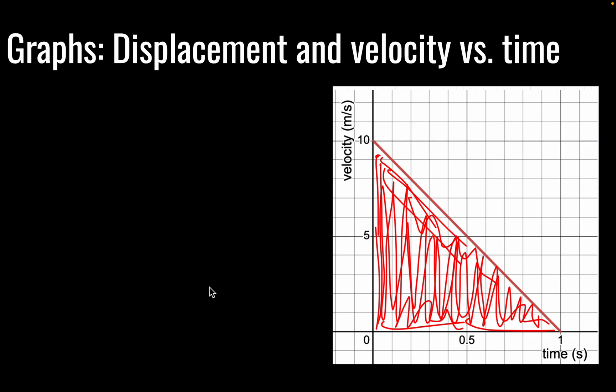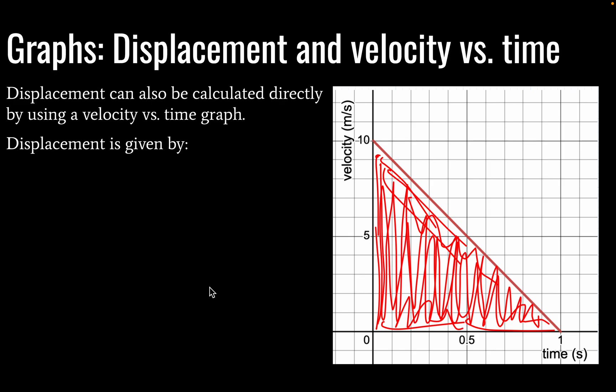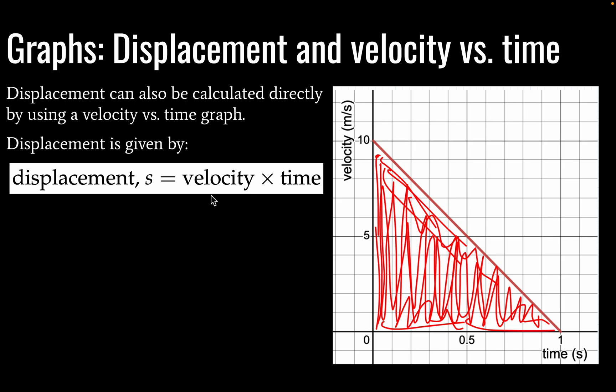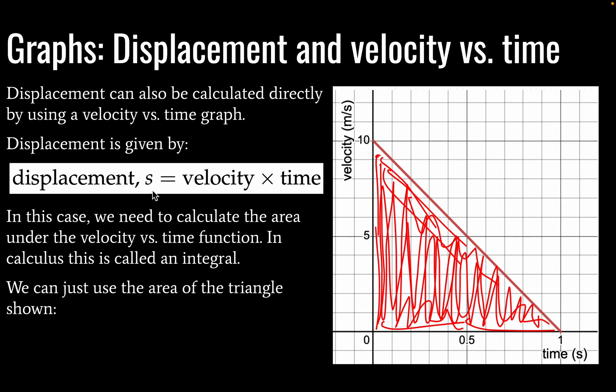Okay, finally, we have displacement and velocity versus time. And we can calculate displacement by looking at a velocity versus time graph. So we know that displacement is given by velocity versus, sorry, velocity multiplied by time. We also use an S for displacement in IB physics.